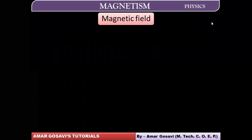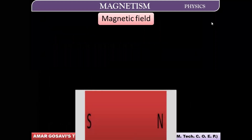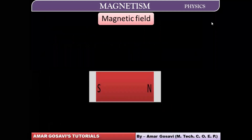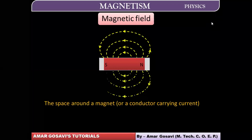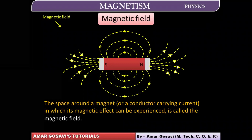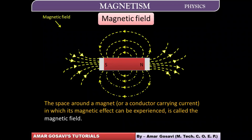The magnetic field around a bar magnet or magnetic material can be imagined in this manner. The space surrounding the magnet — you can feel the magnetic effect in that space, and that is the magnetic field around the magnet.